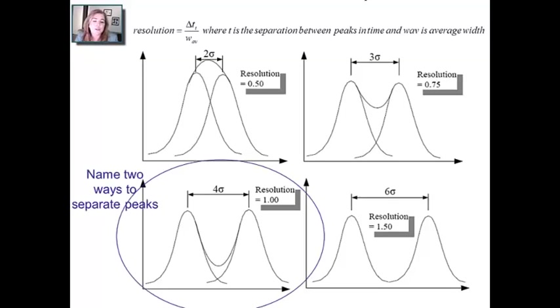Now, you might want to think through, what are two ways to separate these peaks? Well, one way would be what we've been talking about in the last few mini lectures, which is to simply make a set of choices that makes those peak widths narrower.